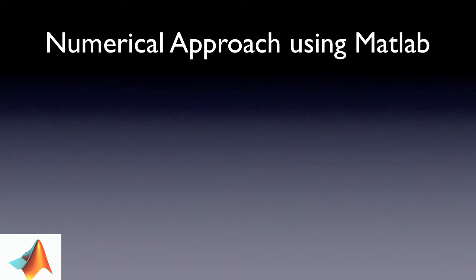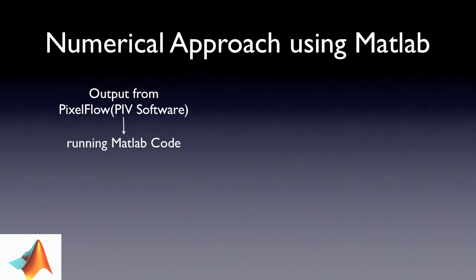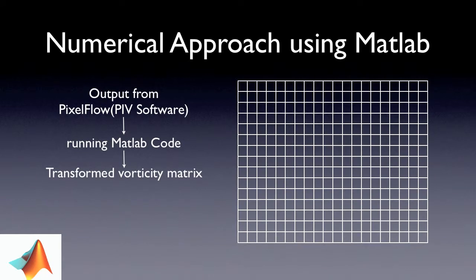Here is a demonstration of how the numerical method works. The initial output from the pixel flow is composed of three column information: the x- and the y-coordinates, and also the vorticity. After running the MATLAB code, the information is transformed into a matrix which is filled with vorticity. Then, we can get the eddy sizes according to different methods.